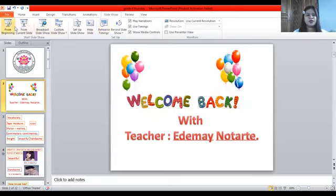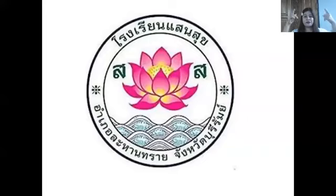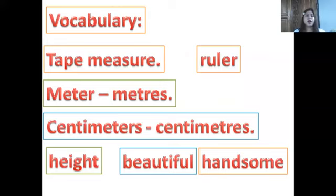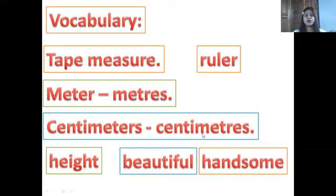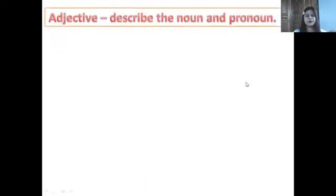Our topic yesterday was about physical appearance. Today we're going to study new vocabulary. Let's start: tape measure, meter — or meters, the spelling is different because this is British spelling — centimeters, height, beautiful, handsome, ruler.